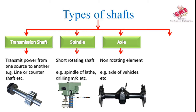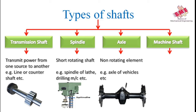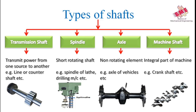Next is the machine shaft, which is an integral part of the machine itself. An example is the crankshaft, which is used to transmit power from the piston and cylinder assembly to the wheels of the vehicle. These are the four types of shaft.